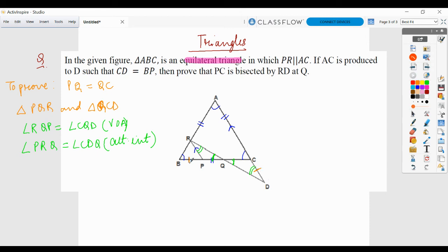If somehow we are able to prove BP equals to RP, we'll have a corresponding relation with CD too. So let's try and work out with RP and BP. If I have to prove them equal, I need to use some property of the triangle RBP.